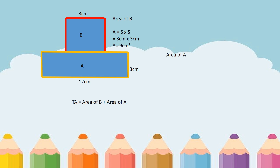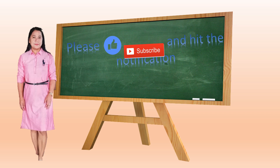The next thing is to find the area of rectangle A using the formula A equals L times W, or length times width. We have 3 centimeters times 12 centimeters, which is equal to 36 square centimeters as the area of rectangle A. Finally, to get the total area of this irregular figure, we add the area of B and the area of A: 9 square centimeters plus 36 square centimeters equals 45 square centimeters as the total area of this irregular figure.